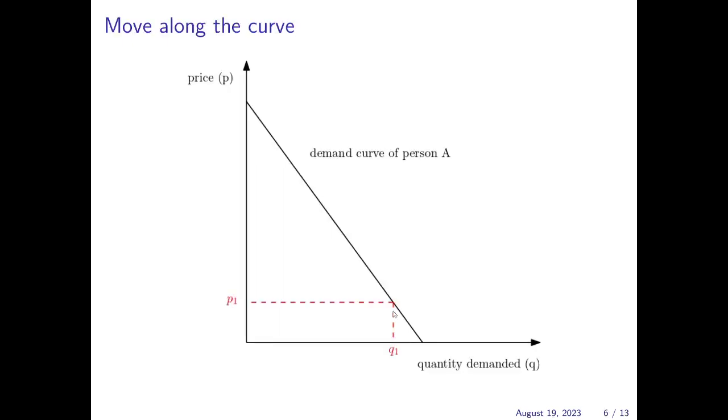To illustrate what happens for a changing price level, we depict a situation here where we have a price P1, say that's the price of a cinema ticket in a certain city, and Q1 would be the associated demand for person A at this particular price. Now, for some reason, the price of the cinema ticket increases, goes up. Then we have a movement along the curve from a higher demand level Q1 at the old price P1 to the lower demand level Q2 at the higher price P2. So this is a movement along the curve.